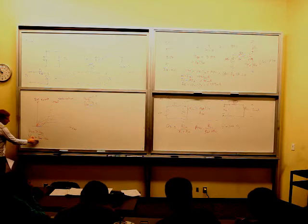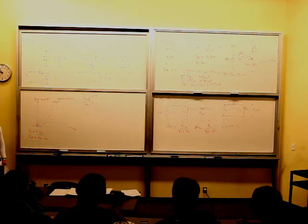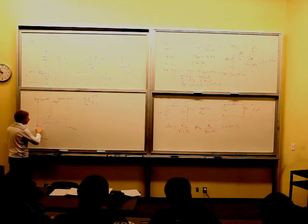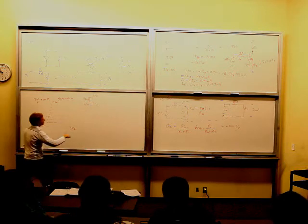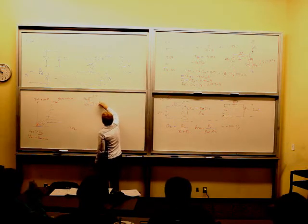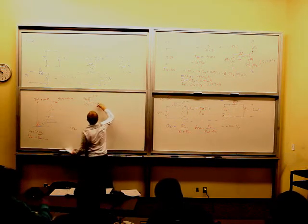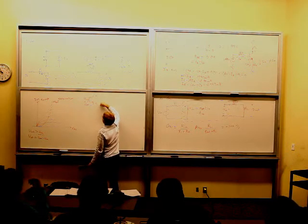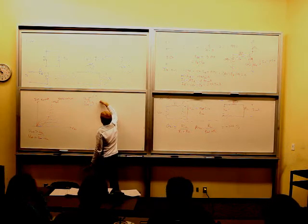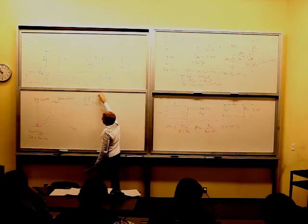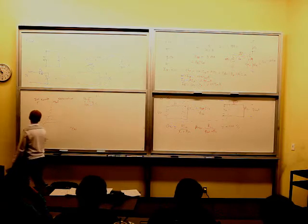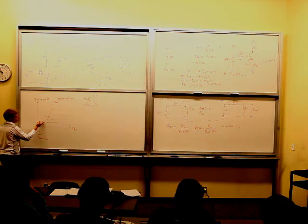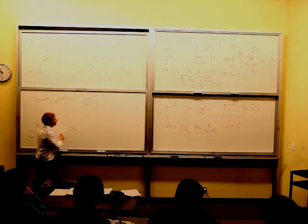So once this thing is on, right, so I put VGS high enough that it's on, now my VDS determines the current going through it. So this thing is on, and let's say that we're at 0 volts, I'm going to get no current. As I increase this and increase this and increase this, I'm going to move from this region where the current going through is increased, and then it ends up saturating. I won't get any more current going through here.